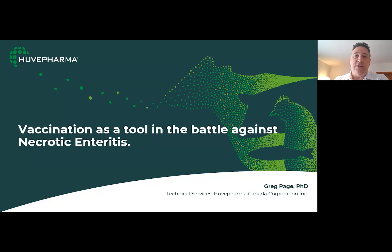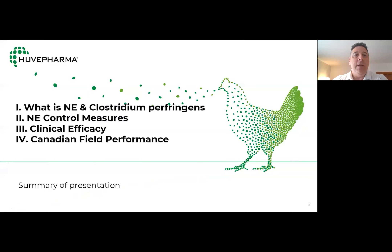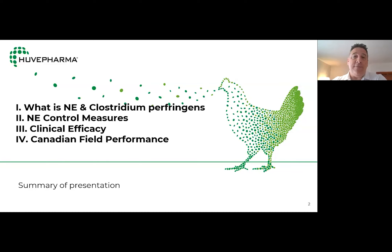What we're going to talk about today: very briefly, we're going to cover what necrotic enteritis is, a little bit about Clostridium perfringens and how it works, then general necrotic enteritis control measures, and then we'll get into the nitty-gritty about the vaccine itself and some data on clinical efficacy under controlled challenge studies, as well as field performance data from Canada over the last couple of years.